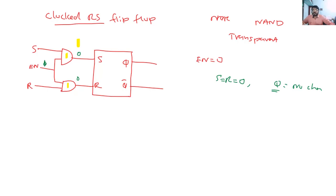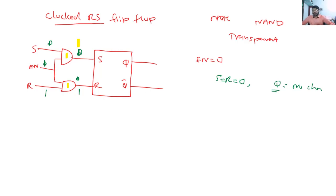When enable EN is high, the S input comes into picture. If S is high, the first AND gate output is high, so Q goes high — the flip-flop is set. If enable is high and R is high, the AND gate output is high, so R is high and S is zero — the flip-flop resets. When both R and S are high with enable high, that is the forbidden condition. This is the clocked RS flip-flop behavior.